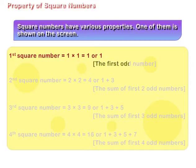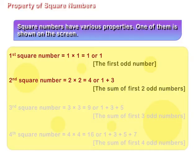Second square number is equal to 2 multiplied by 2, which is equal to 4, or 1 plus 3, the sum of first 2 odd numbers. Third square number is equal to 3 multiplied by 3, which is equal to 9, or 1 plus 3 plus 5, the sum of first 3 odd numbers.